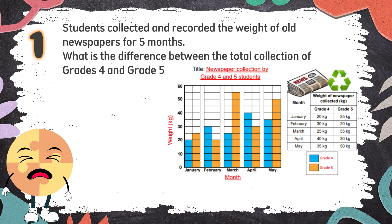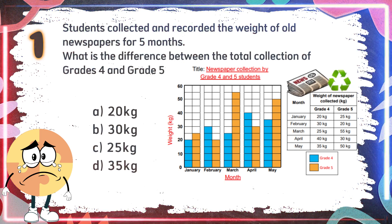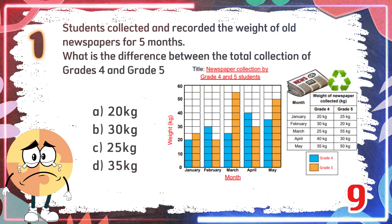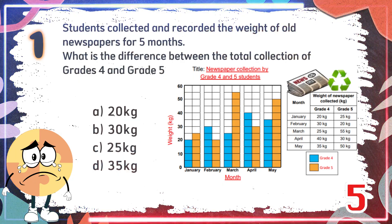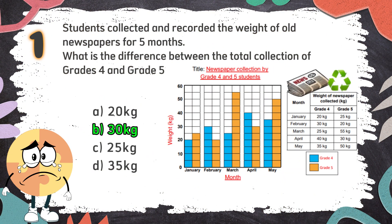Average Round. Number 1: Students collected and recorded the weight of old newspapers for 5 months. What is the difference between the total collection of grades 4 and grade 5? The choices are A. 20 kg, B. 30 kg, C. 25 kg, D. 35 kg. The correct answer is B. 30 kg.